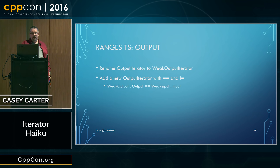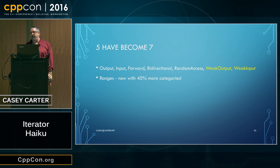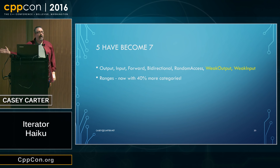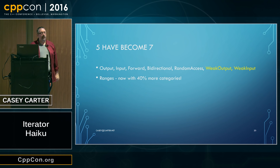Now we're using the same weak versus strong relationship for output iterators as already exists for input iterators from the Palo Alto TS. This means the five categories have become seven. We're officially halfway through the haiku. We've got two more iterator categories that weren't in standard C++, which means 40% more categories. This looks great on a marketing bullet because as C++ programmers, one of our primary jobs is to make small numbers bigger or make big numbers smaller.